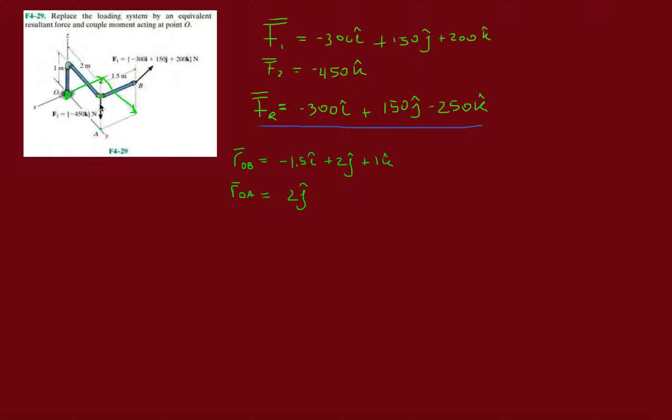It's not going to contribute any moment in the Z direction. We're only left with the X direction. It's going to make this whole structure rotate about the X axis. So the distance from O to A is just 2j.